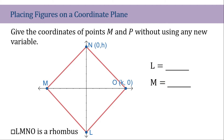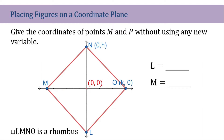Number two: Give the coordinate points of M and P without using any new variables. By looking at it, we can assume that the center is the origin, so this will be (0, 0). Since this is a rhombus, the sides should be equal to each other, and the diagonals of a rhombus bisect each other. So these are the diagonals, and they bisect each other at (0, 0).